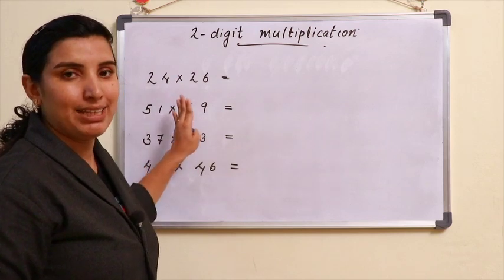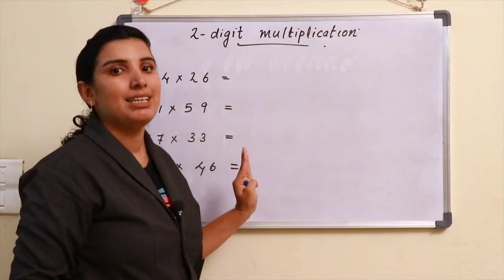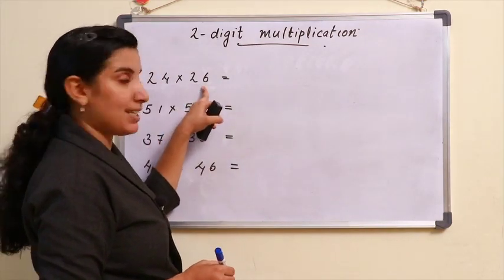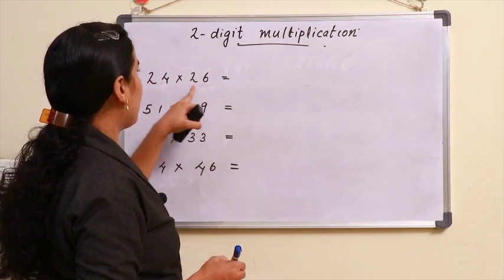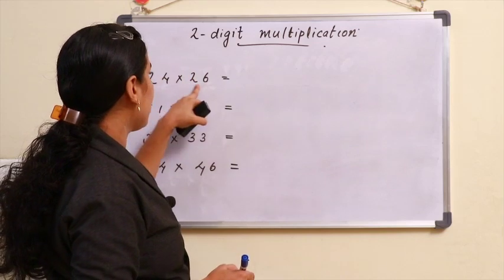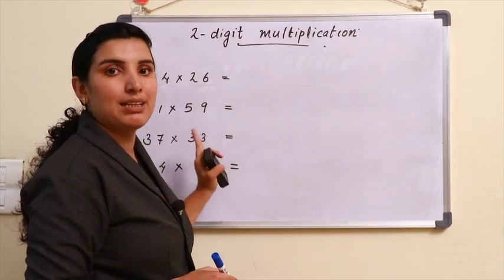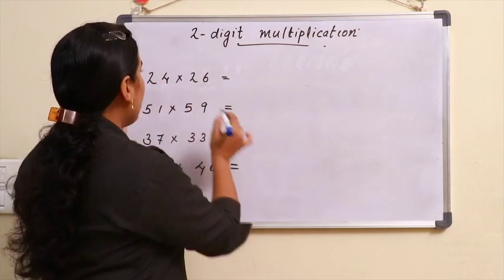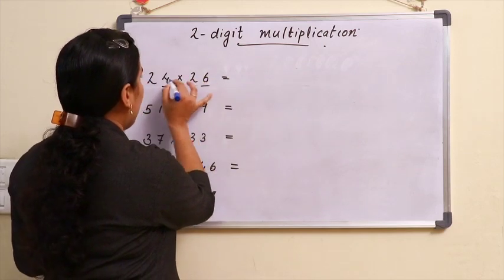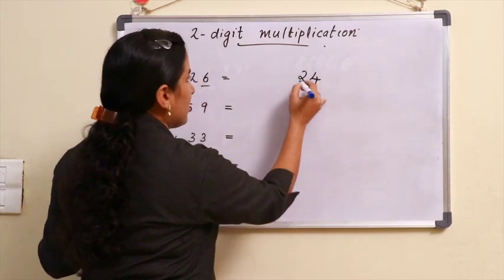We have 10's in the place of 10's. The first question is 24 × 26. We have the same tens digit, and the units digits add to 10. Now let's multiply these numbers. 6 × 4 = 24.